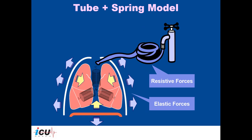You can simulate the airways and lungs with chest walls using the tube and spring model. In this model, the tube represents the airways and has resistive forces that need to be overcome in order to get the air through. The spring represents the lung and chest wall, which has elastic forces that need to be overcome in order to expand the lung and get the volume inside.